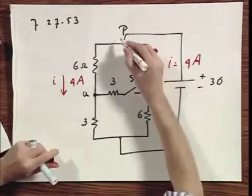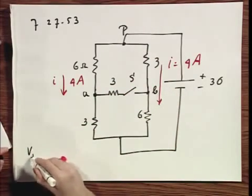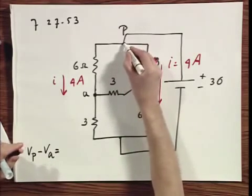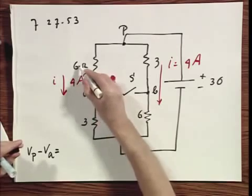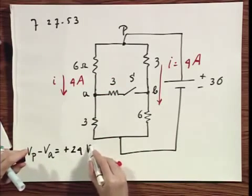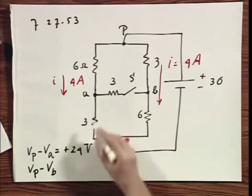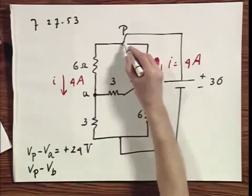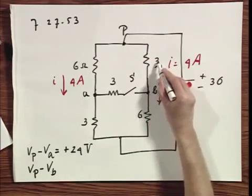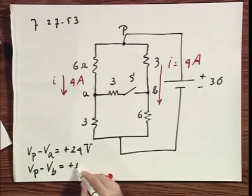What is Vp minus Va? Vp minus Va. P is a higher potential than A. Four amperes, six ohm. So, that is plus 24 volts. What is Vp minus Vb? Vp minus Vb. This has a higher potential than this. Three ohms, four amperes. That is plus 12 volts.